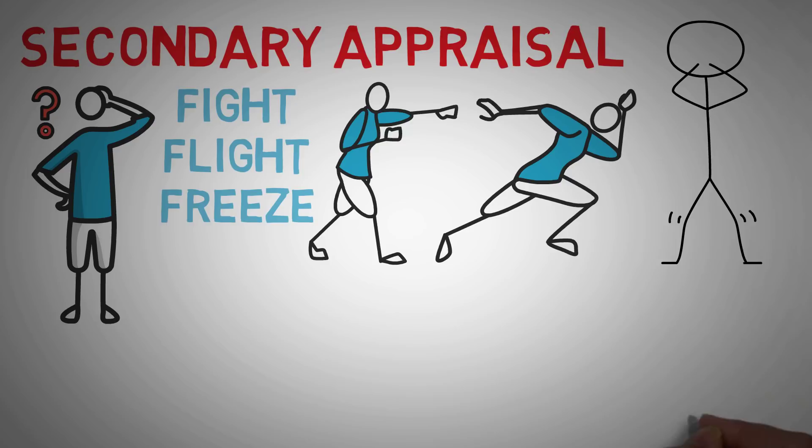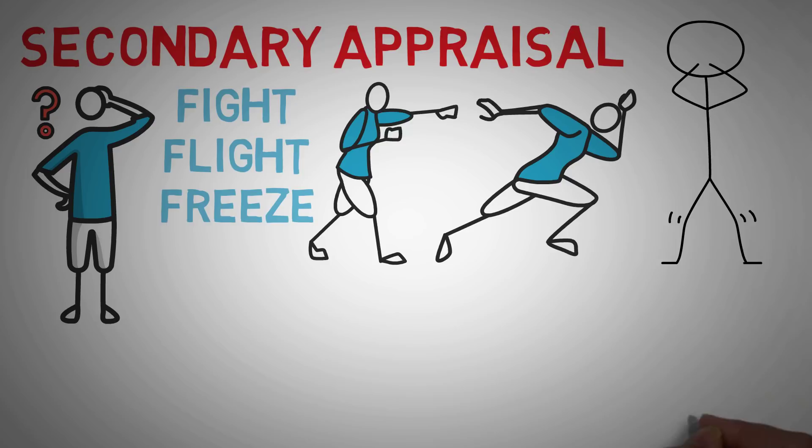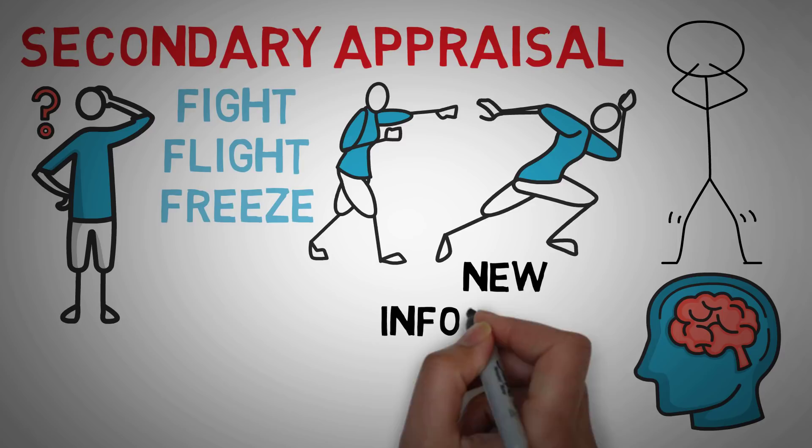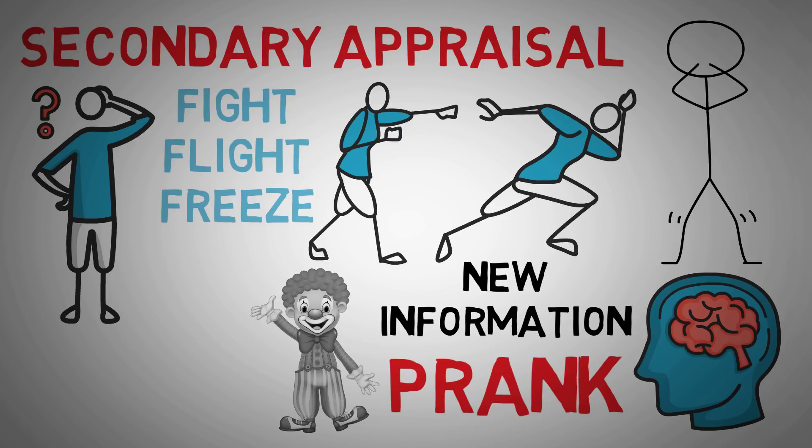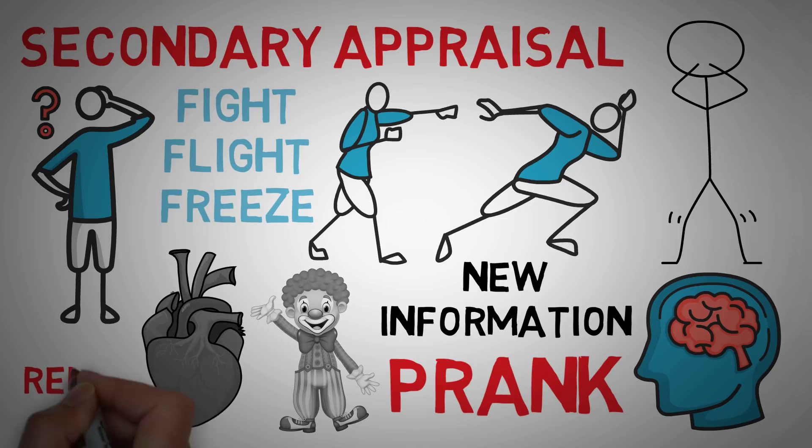But this isn't where cognition ends. You may go through a reappraisal if you gather new information that changes your perception of the situation. For example, maybe the clown yells out your name and you realize it's your best friend's voice. Now this clown doesn't seem like such a threat — it's just your friend playing a prank on you. Your palms might be sweaty and your heart may still be beating fast, but you now label your emotion as relief instead of fear.